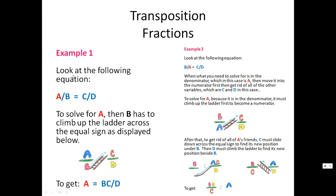Example one: look at the following equation, a over b equals to c over d. To solve for a, then b has to climb up the ladder across the equal sign as displayed below. Here is b — because b is a denominator, with the equal sign in between, b has to climb up the ladder to c. So you will end up getting a equals to bc over d. Now you have solved for a.